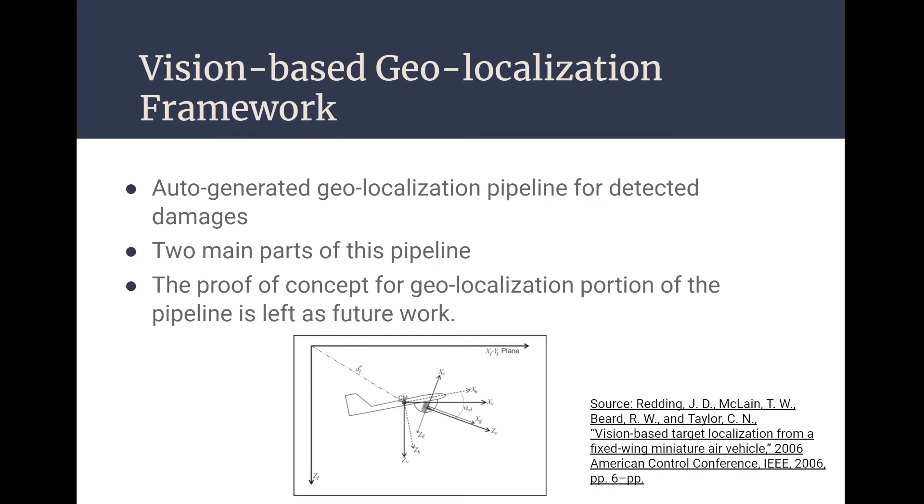In our study, we also proposed an auto-generated geolocation pipeline for detected damages. There are two main parts of this pipeline: location of the damages in images and location of the same damages in actual environment. The main idea was to find the pixel location of the detected damage in the camera frame of reference first, then using the frame transformations, the location of the damage in the real world can be calculated.